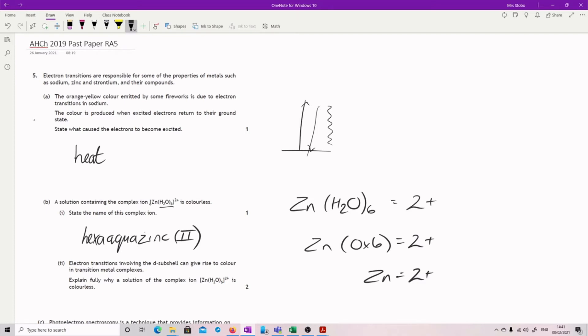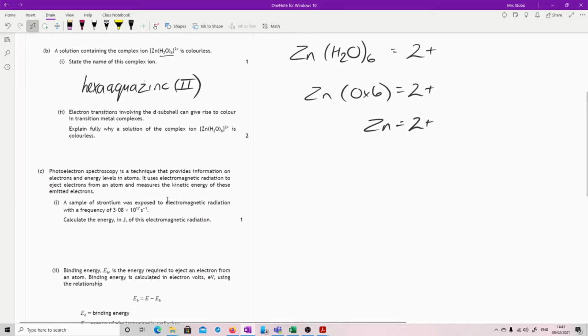Electron transitions involving the d subshell can give rise to color in transition metal complexes. We know that. Explain fully why a solution of the complex ion is colorless. It's worth two marks, so you're going to have to put two points in here.